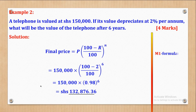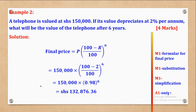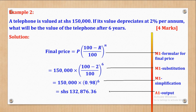That's what they wanted. For marking: M1 for quoting the formula, M1 for substituting, M1 for simplifying, and A1 for the output.